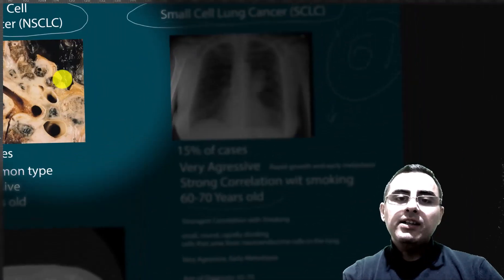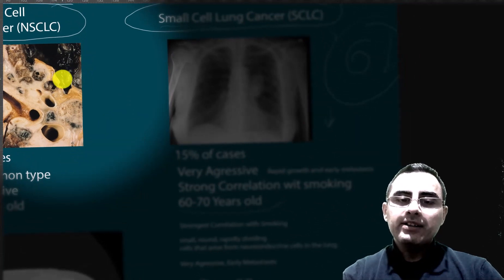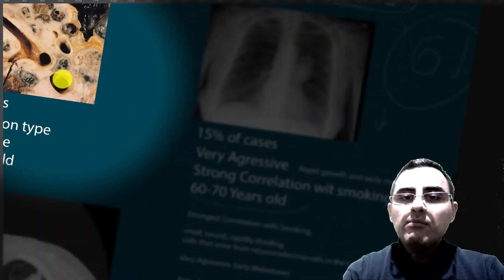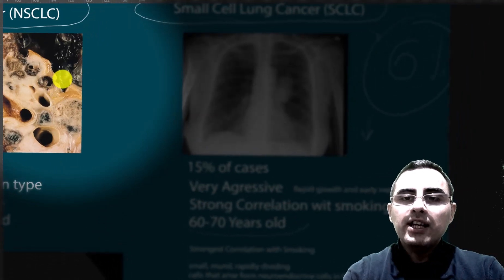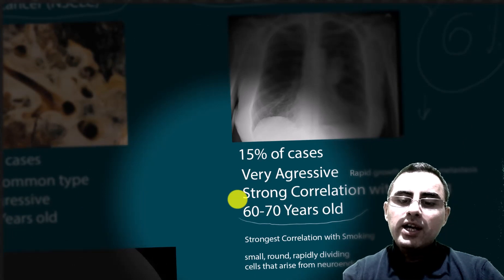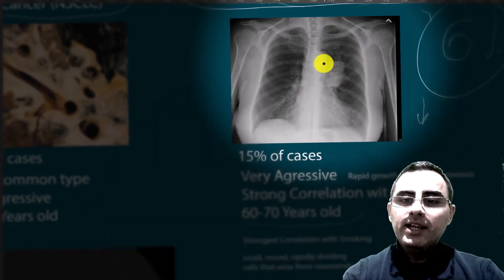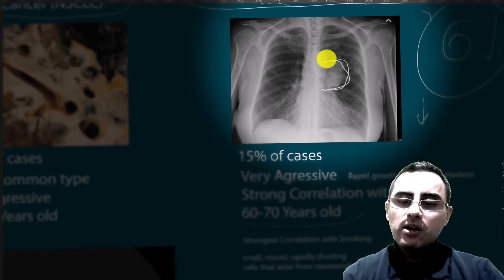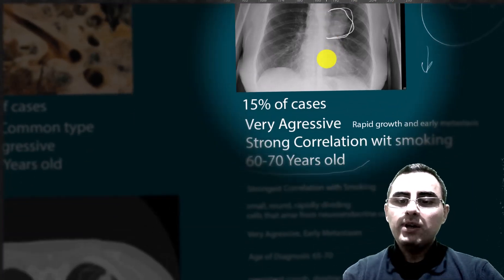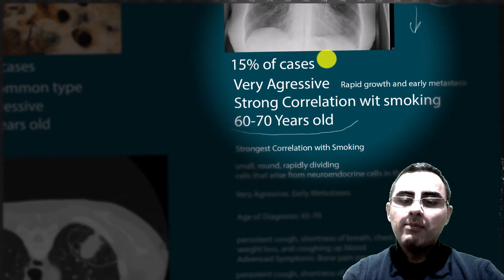Small cell lung cancer is very aggressive and most strongly associated with smoking. It is characterized by small, round cells that divide rapidly. It has a more central position, so symptoms are usually present, including persistent cough, shortness of breath, chest pain, weight loss, and coughing up blood.